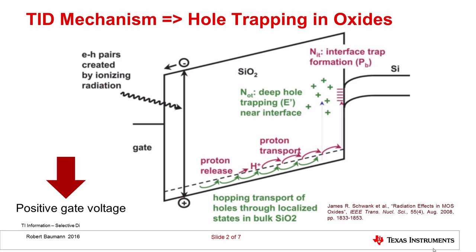The total ionizing dose mechanism is related to hole trapping in the oxides — that's the primary mode by which it affects MOSFETs. There's also the creation of interface states. This is a band diagram of the metal oxide semiconductor structure. We have the gate electrode on the left, the gate oxide in the middle, and then the silicon interface and silicon substrate to the right. In the vertical direction we have electron energy, and we put a positive gate voltage which pulls down the gate, creating an electric field across the oxide.